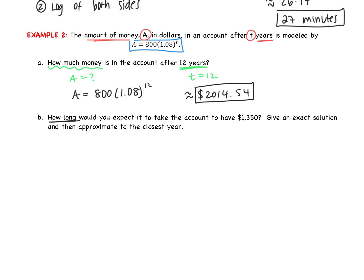Okay, so then in part B, how long, that refers to T, how long would you expect it to take the account to have $1,350? So that's A. This time we're given A, we're solving for T. Here's what's really important. It says give an exact solution and then approximate to the closest year. So exact solution is what your solution looks like before it goes into the calculator. So let's try this one. In our equation, we're going to put in 1,350 for A equals 800, 1.08 to the T. T is what we're looking for.